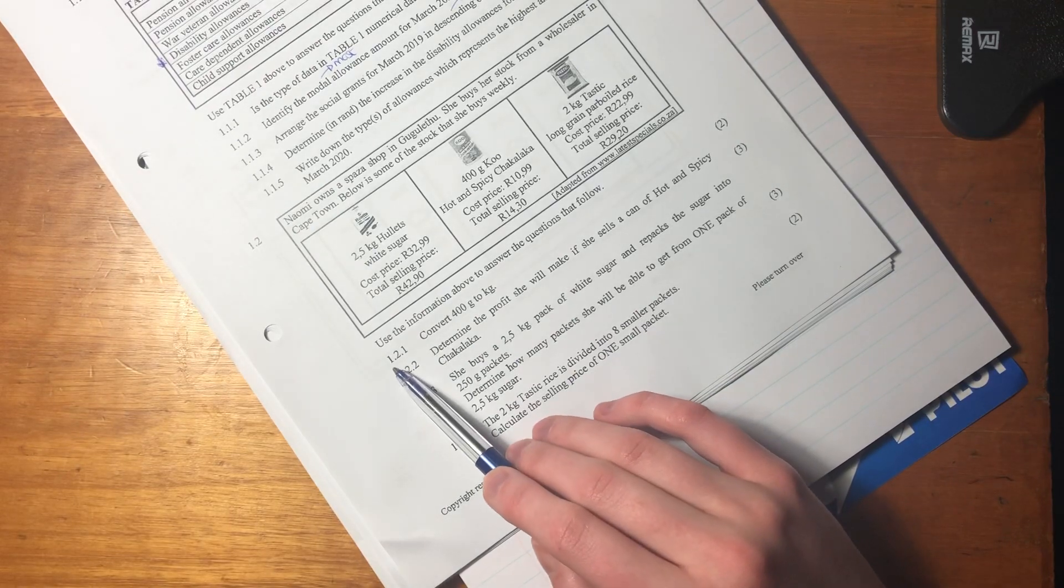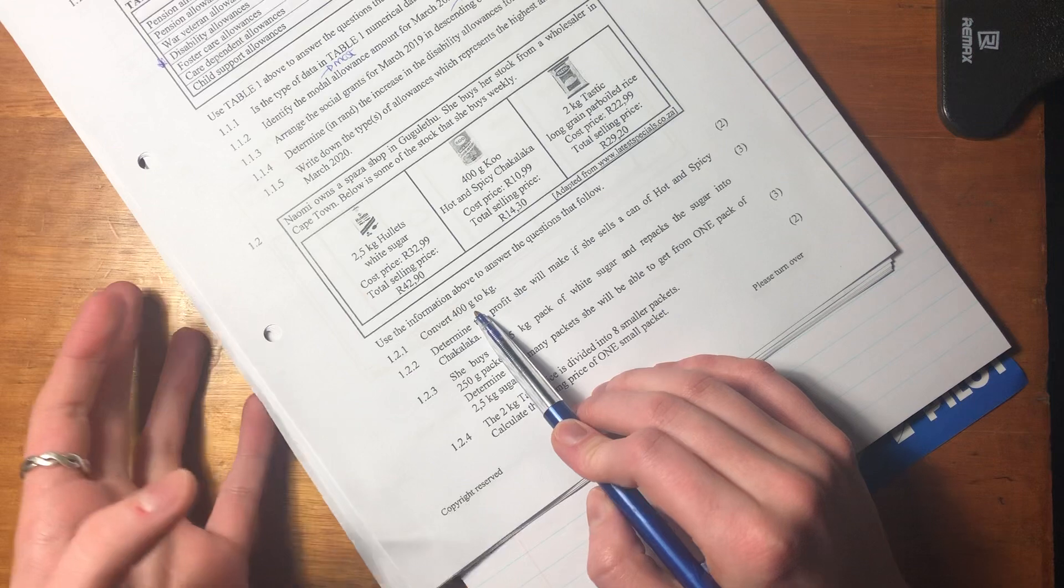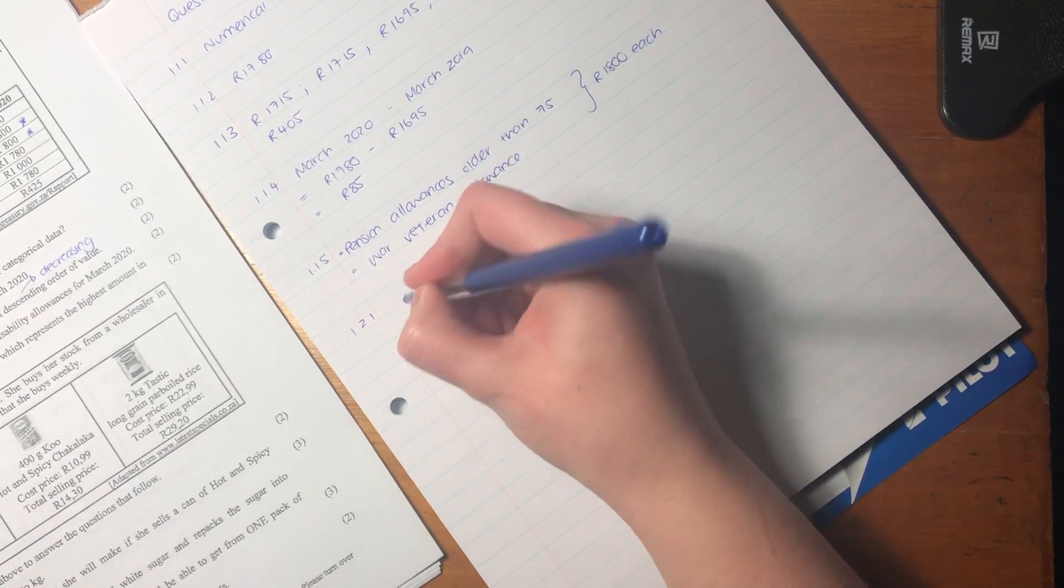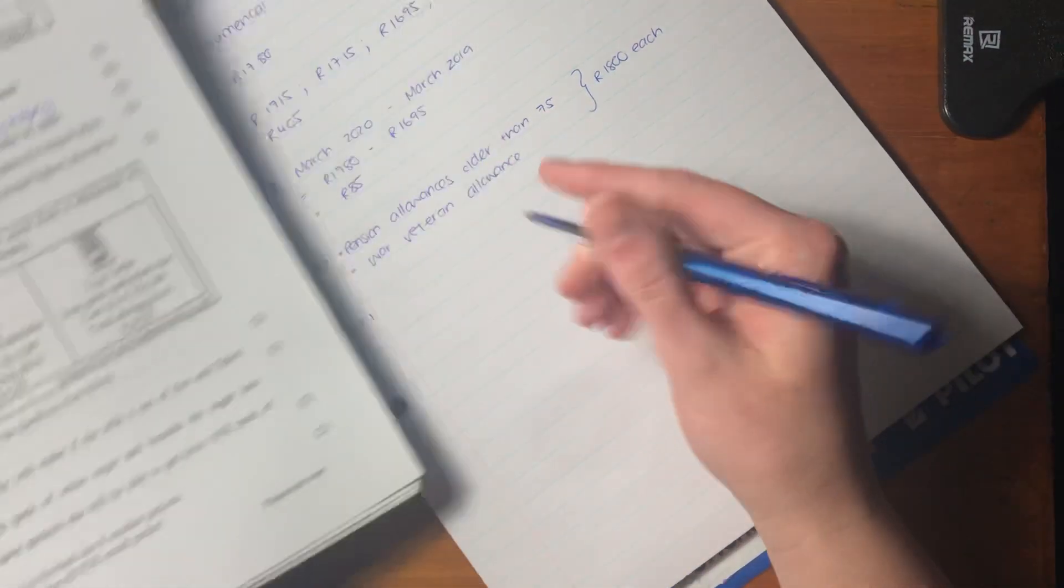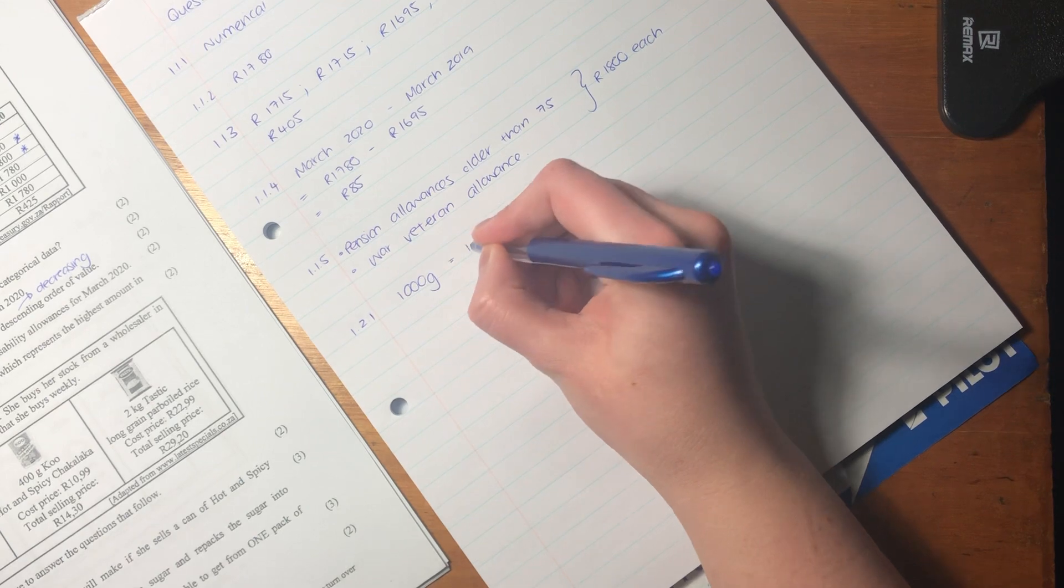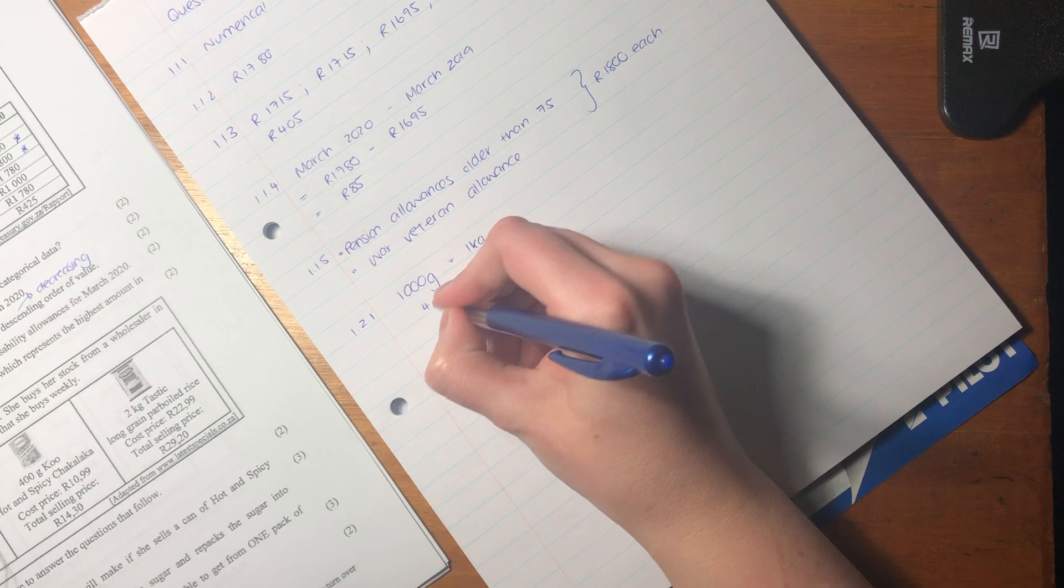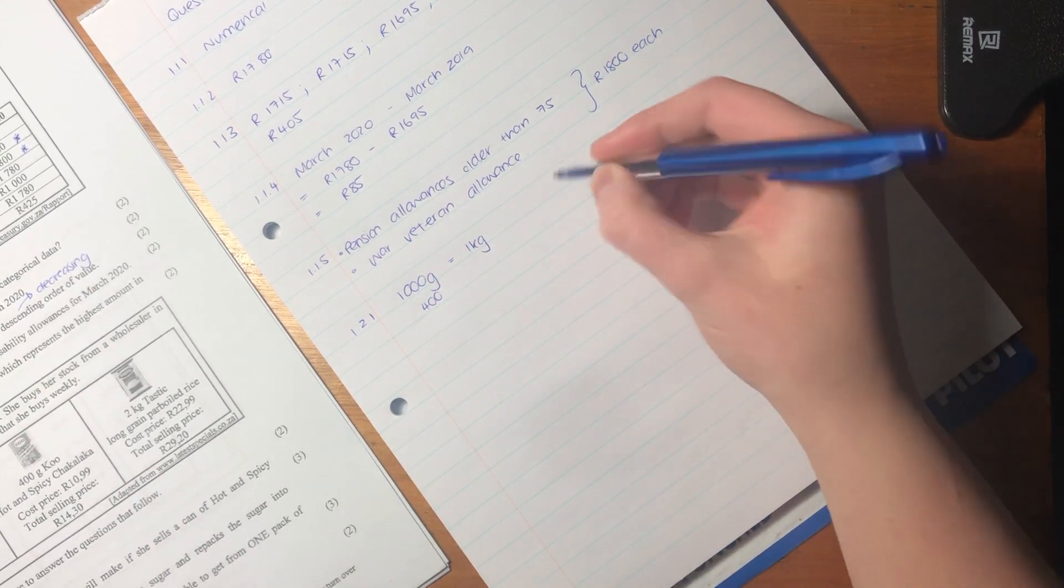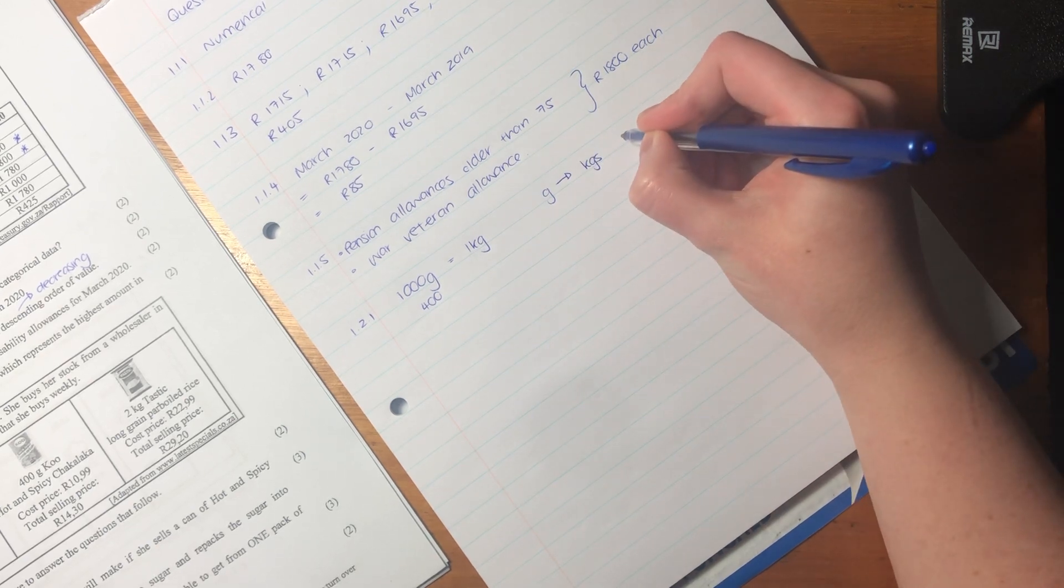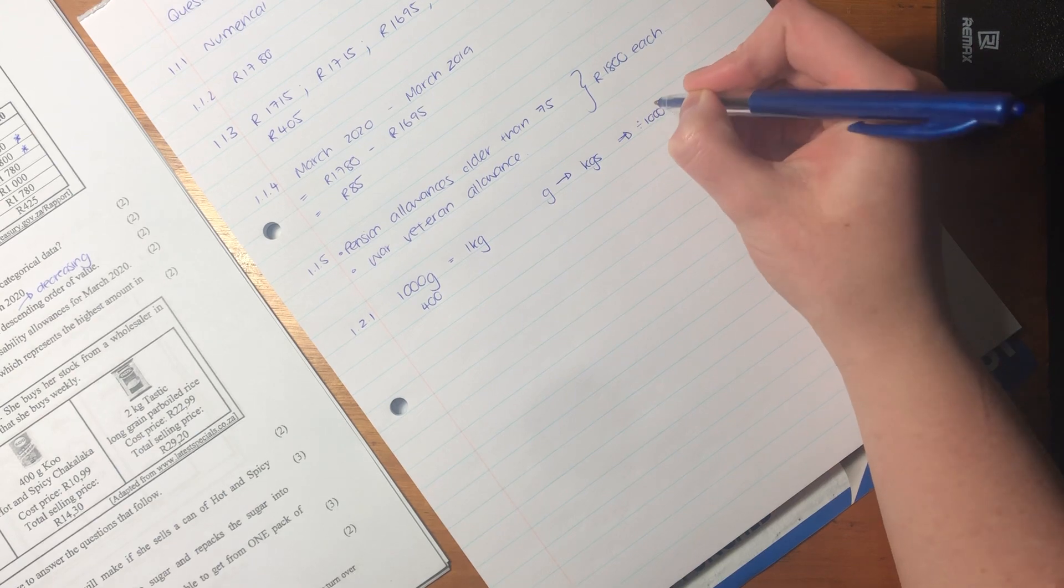The first question asks us to convert 400 grams to kgs. What's important here is that 1,000 grams equals 1 kg. So now we know that we have 400 grams. In order to get from grams to kgs, we know that we have to divide by 1,000.